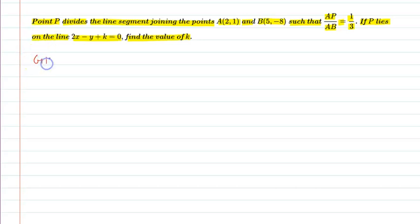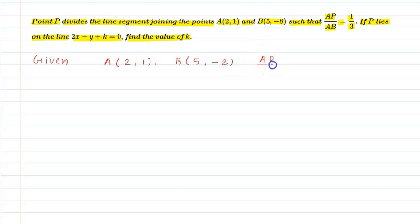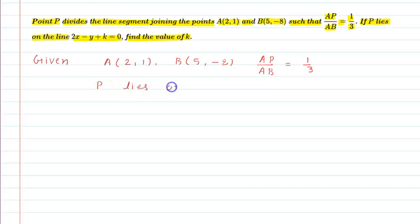Let us see the given information in this question. Coordinates of A are (2, 1) and B is (5, -8), and AP upon AB is equal to 1 upon 3. Also, point P lies on the line 2x minus y plus k is equal to 0.